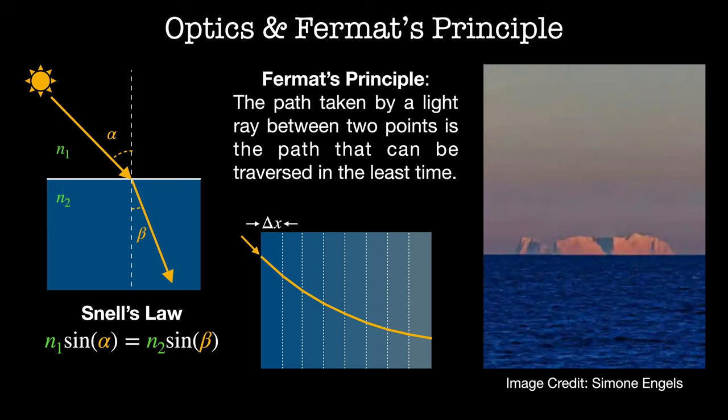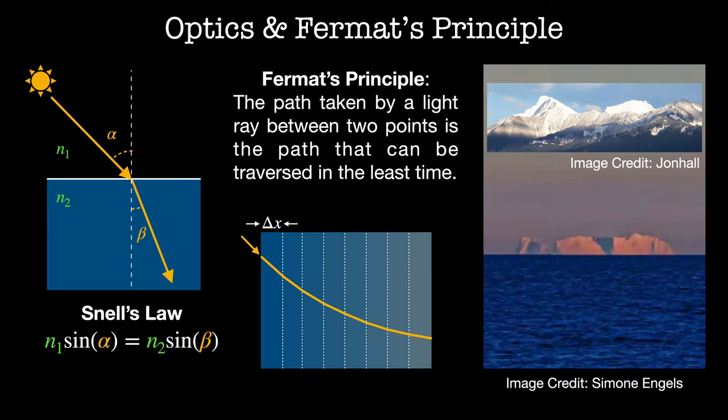Instead of going back out into the atmosphere, light rays bend down to ground level. This image is actually showing Mount Sheem, which is more than 200 miles away.